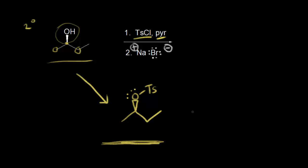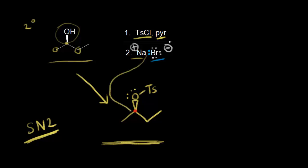In step two, we add sodium bromide, and again we get an SN2-type mechanism. We identify the electrophile — the carbon bonded to the oxygen — since the oxygen withdraws electron density from it. The bromide anion functions as the nucleophile. A lone pair of electrons on bromide attacks the electrophilic carbon, forming a bond. At the same time, these electrons come off onto the oxygen — a concerted SN2 mechanism.